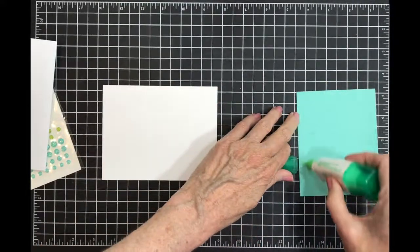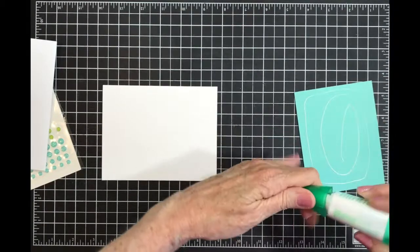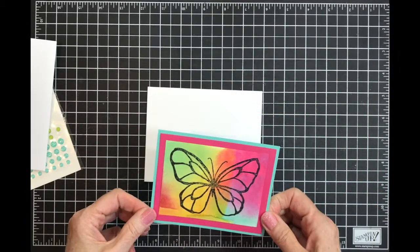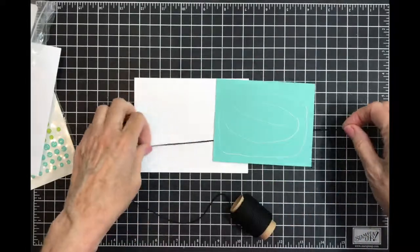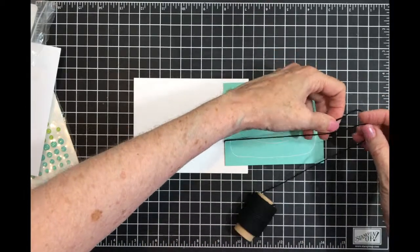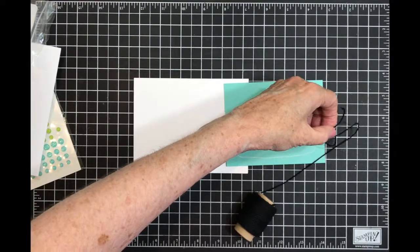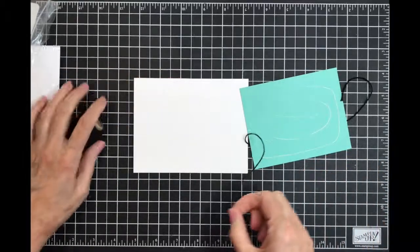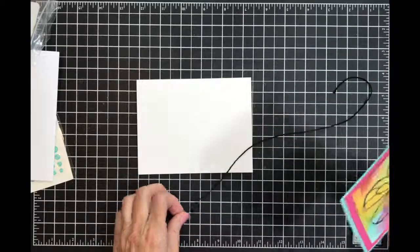Actually, you know what might look really cool is the black baker's twine. Let me get some. Since I've already got the glue on the back, I'm going to do a little bit of judging and pray I get it long enough. Now I'm going to put this across my card and then I'll put this down.